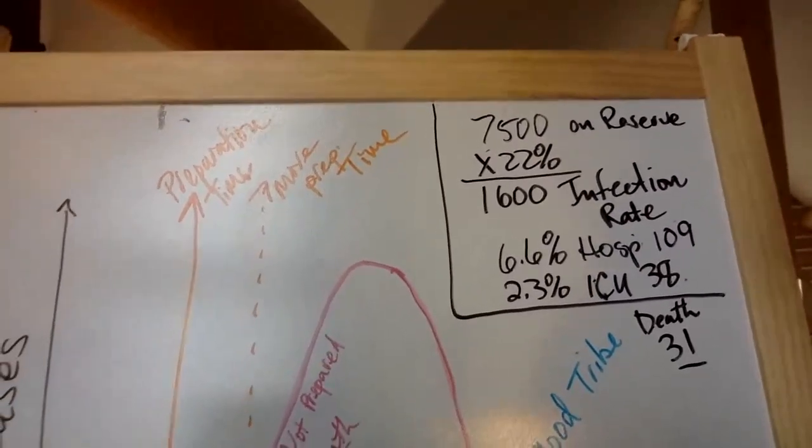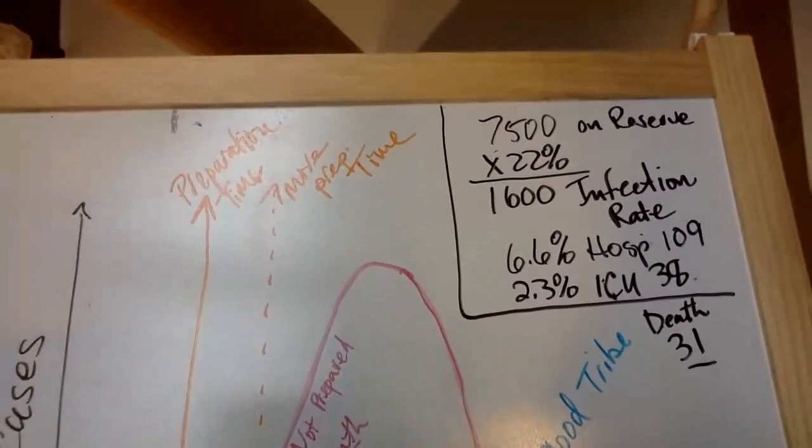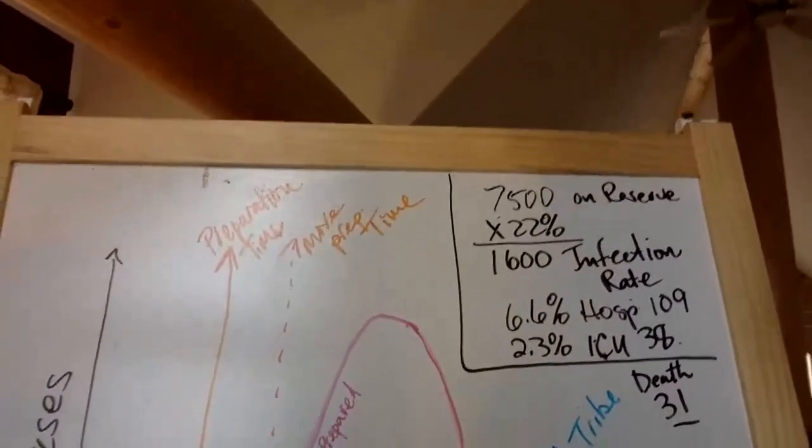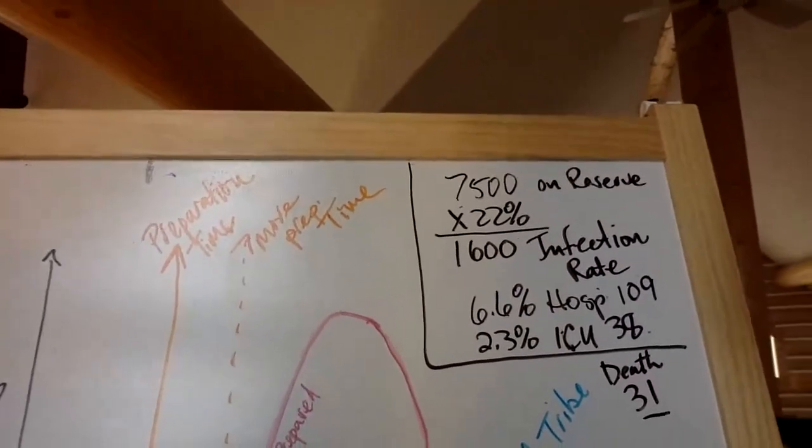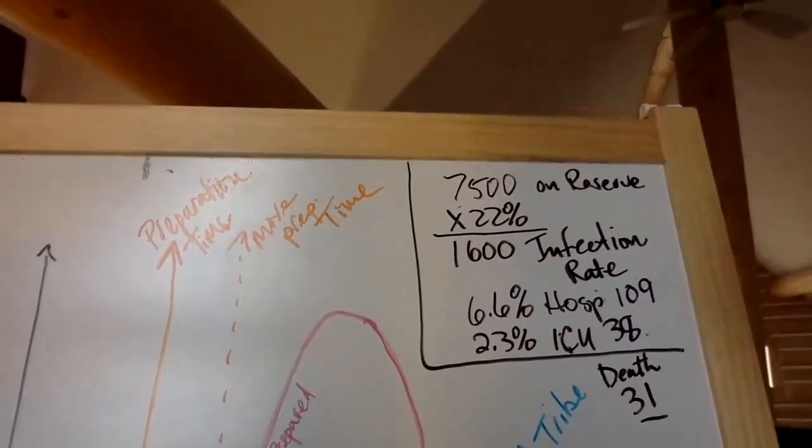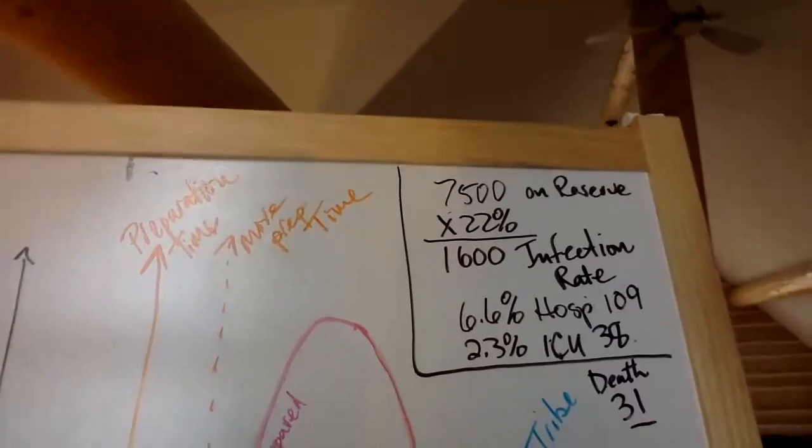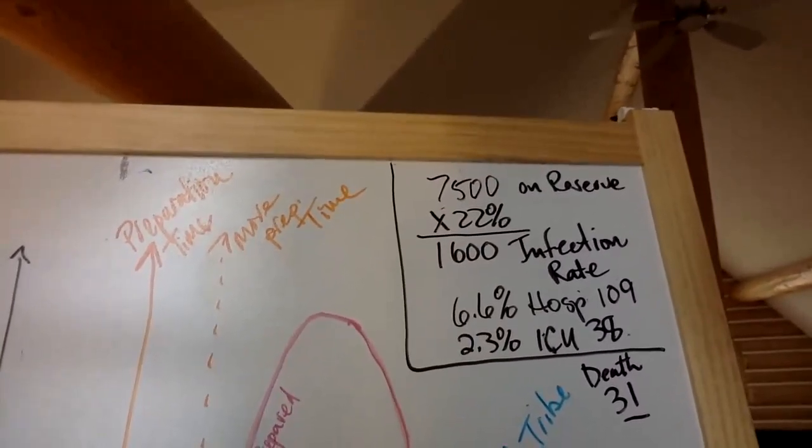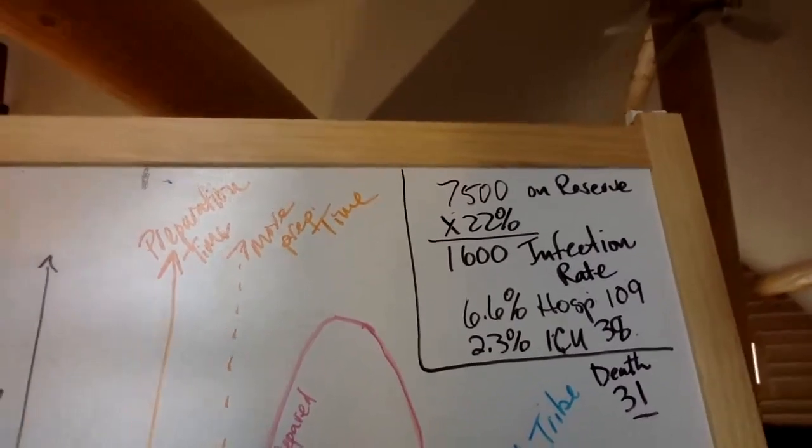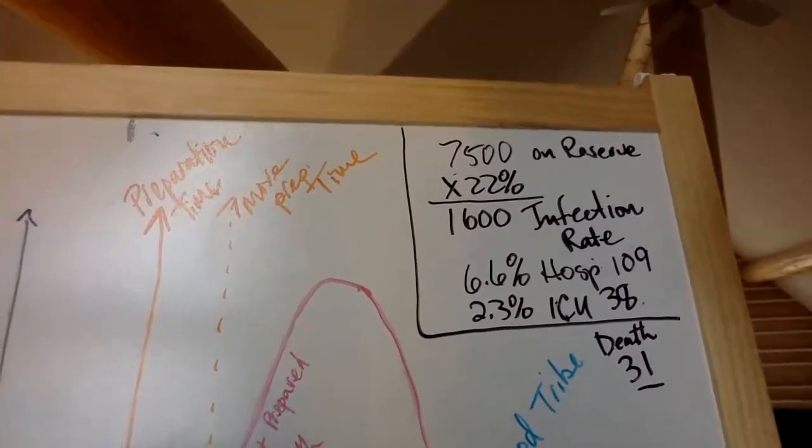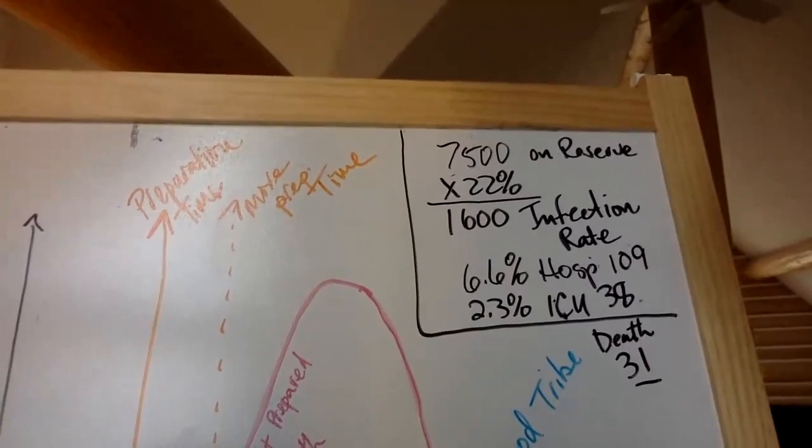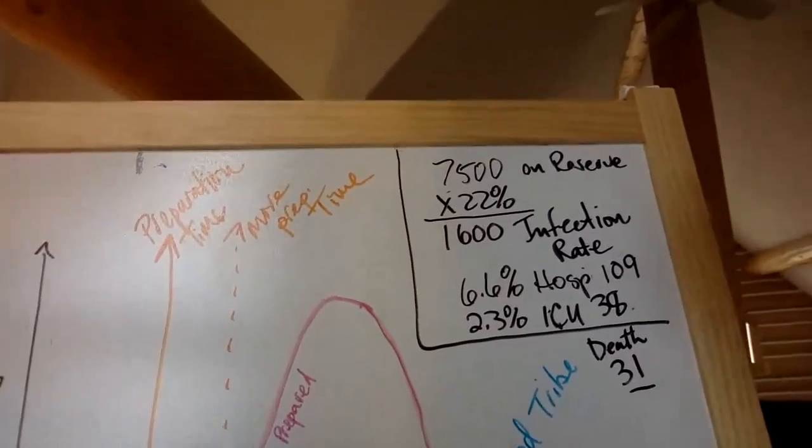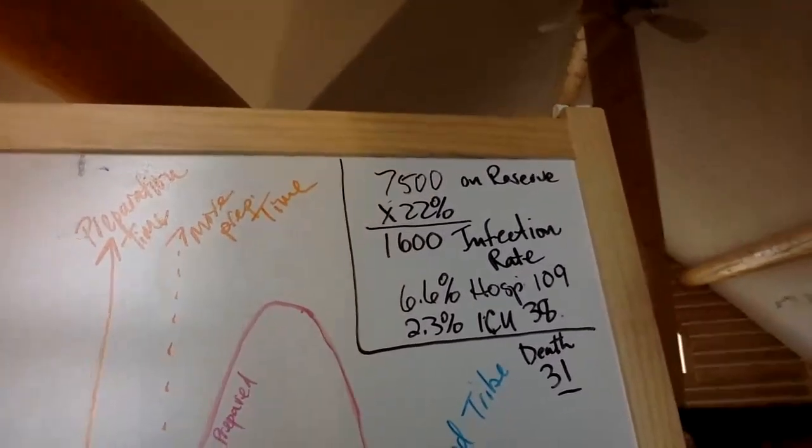The projection is about 6.6% of our people will be hospitalized. That means we're looking at a number of 109 of our people will be hospitalized. 2.3% of our people will end up in ICU. So we're looking at a number of 38 and then we're looking at a number of 31 if we're looking at mortality and we're hoping we don't get anywhere near that. And that's why we're doing all the work that we're doing.